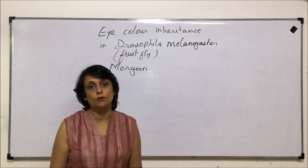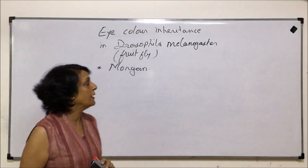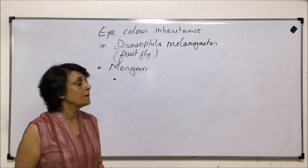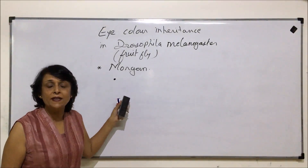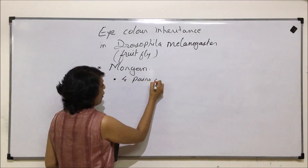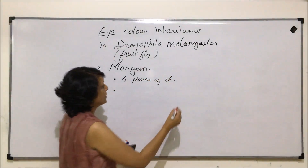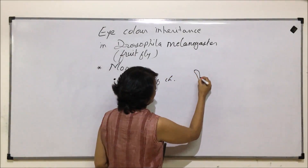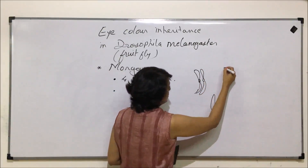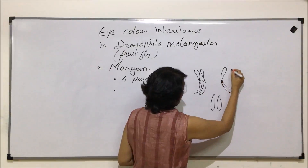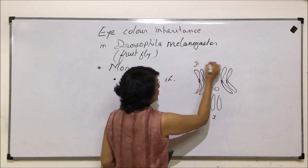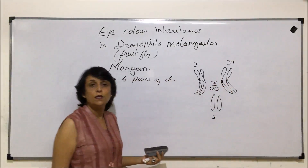Let us first discuss a few things about Drosophila. Normally fruit flies are small flies found around ripened fruits. The reasons Morgan picked fruit flies include: first, it has four pairs of chromosomes, which are numbered and drawn — chromosome number one, two, three, and four.